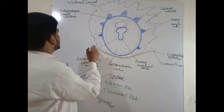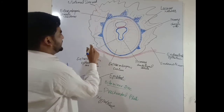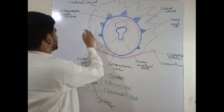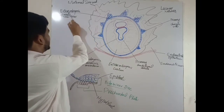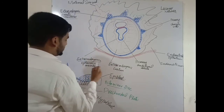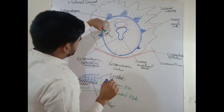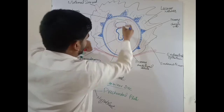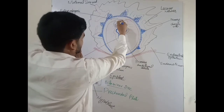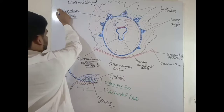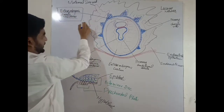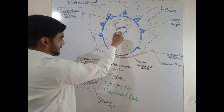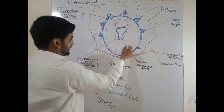The extra-embryonic mesoderm is divided into two parts: one is the extra-embryonic somatic mesoderm, and the other is the extra-embryonic splanchnic mesoderm. The extra-embryonic mesoderm lining the cytotrophoblast and the part surrounding the amnion is called the extra-embryonic somatic mesoderm.